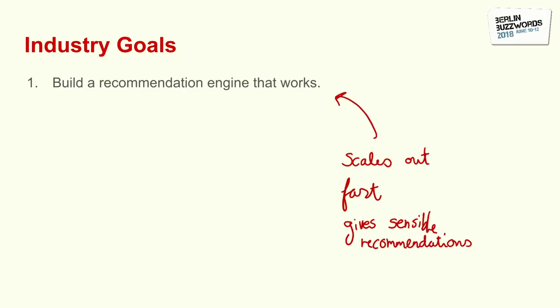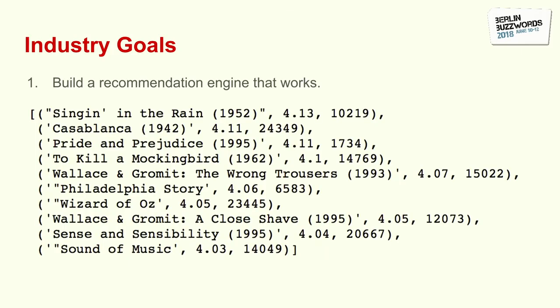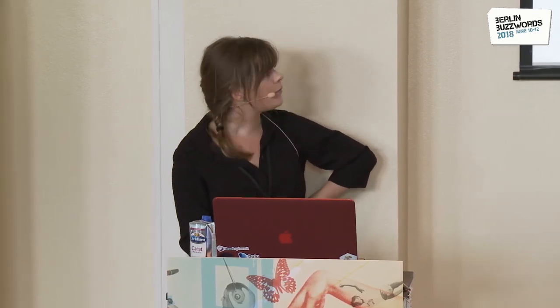That brings us onto industry goals. The goal is to build a recommendation engine that works — where 'works' means improves the overall performance of our application by helping us meet some business objectives. There's going to be some metric we're optimizing for, but it's not mean squared error of the parameters of the model, for example. What we're missing right now is sensible recommendations. It turns out all we have to do is filter out films that have a low number of votes. I've filtered out films rated by fewer than 500 people, and all of a sudden these recommendations look much better. That filtering process isn't amending alternating least squares, it's not novel, tons of people have done it before me, and it's not going to get me a publication. But it works. I could ship this.